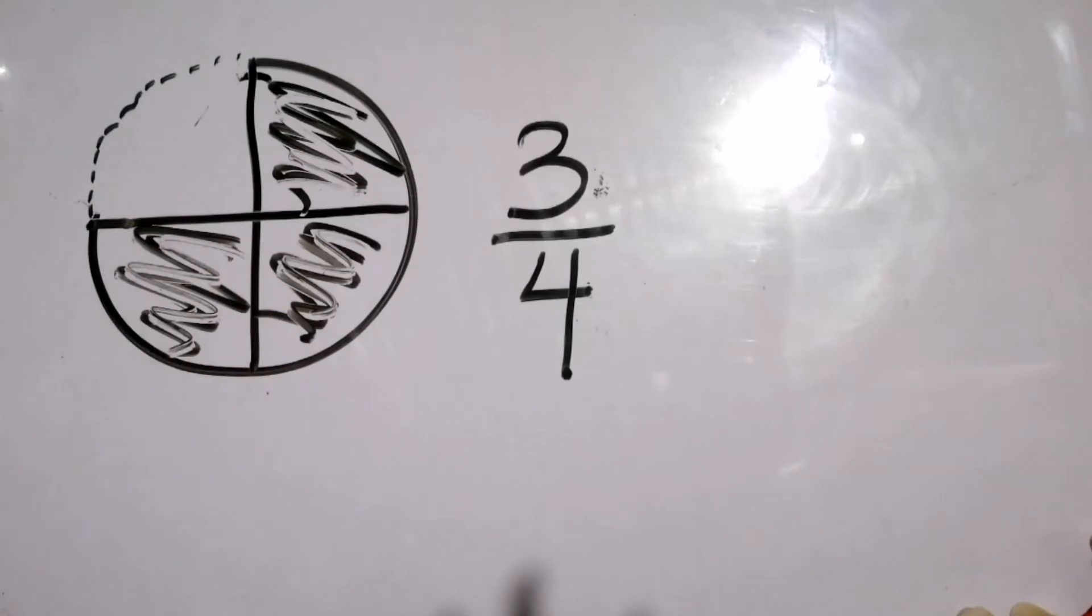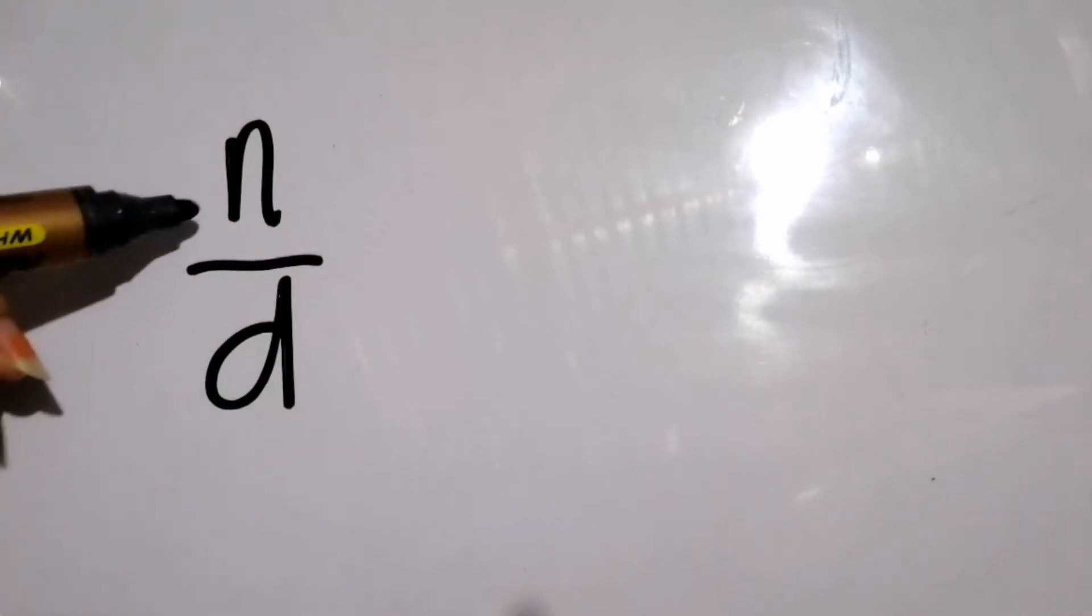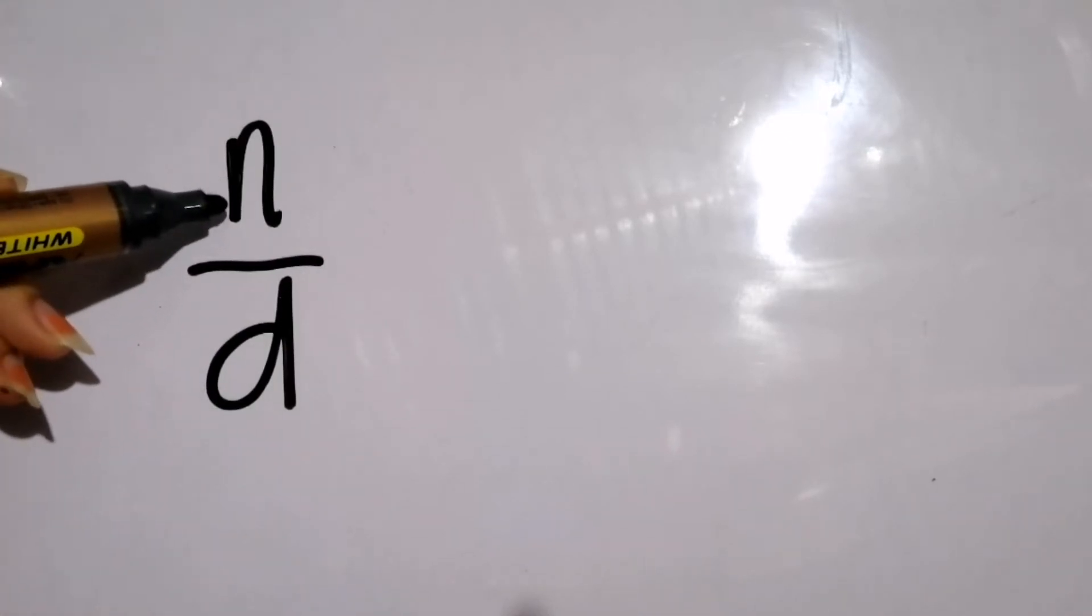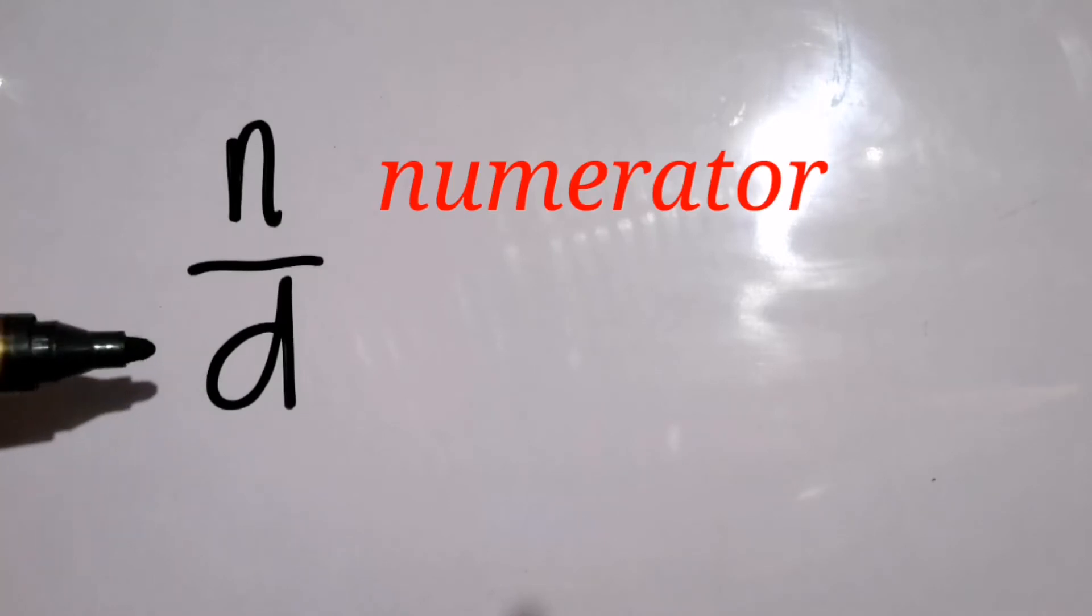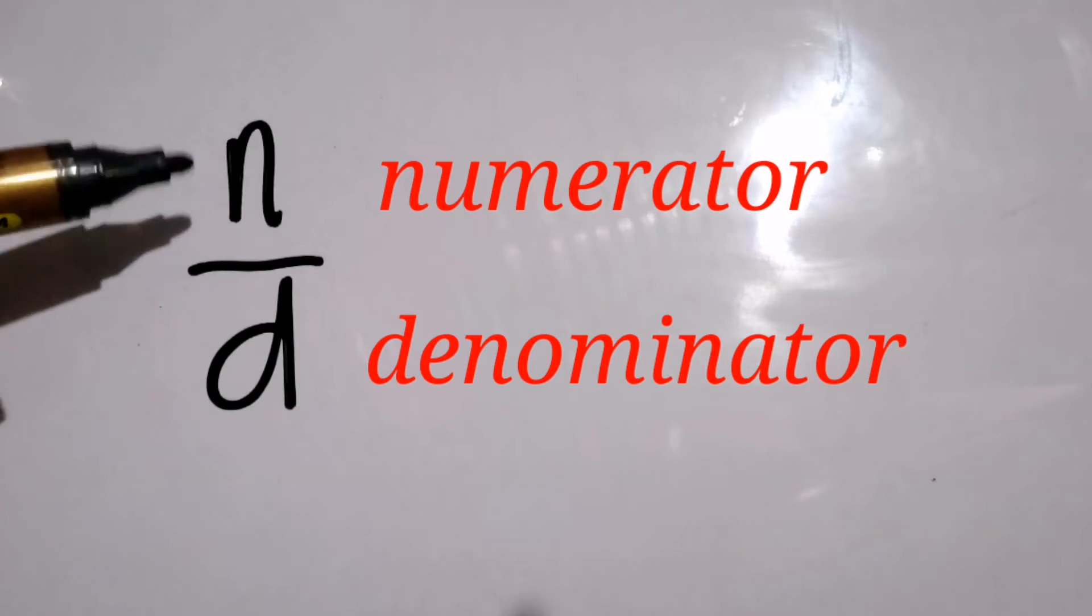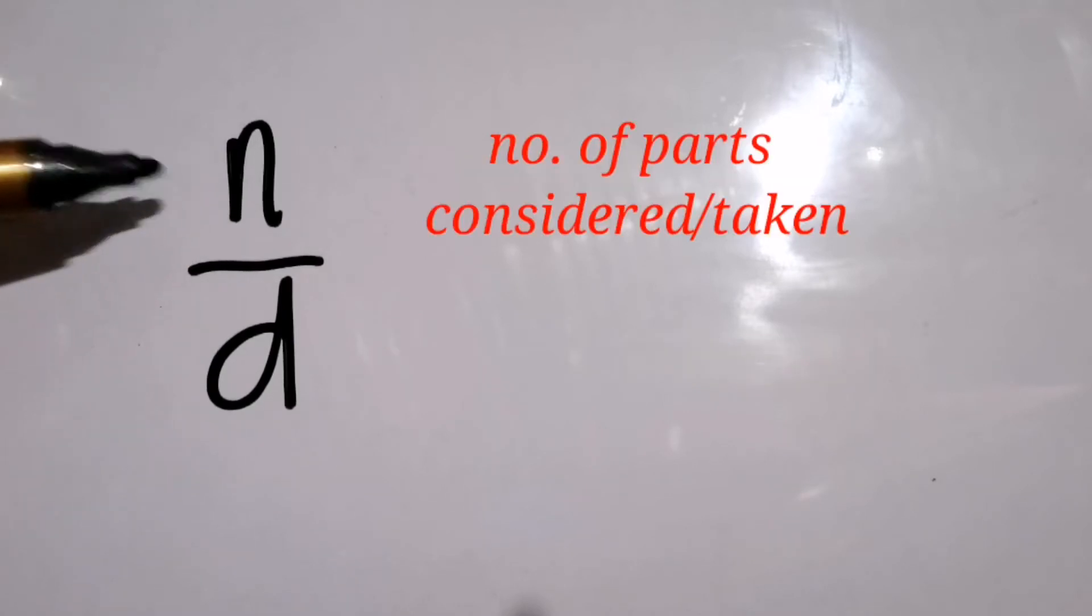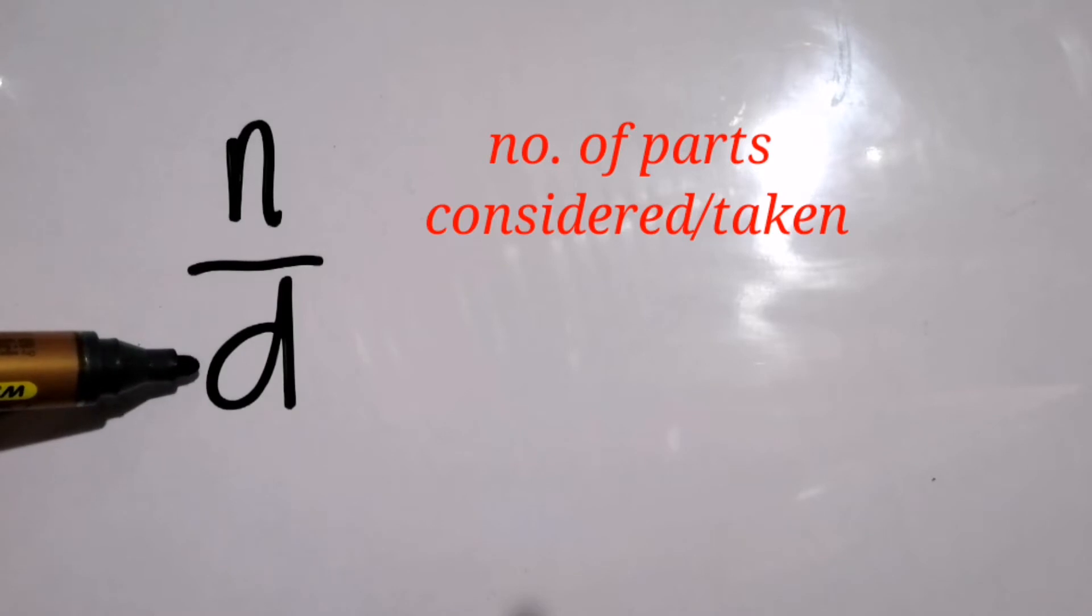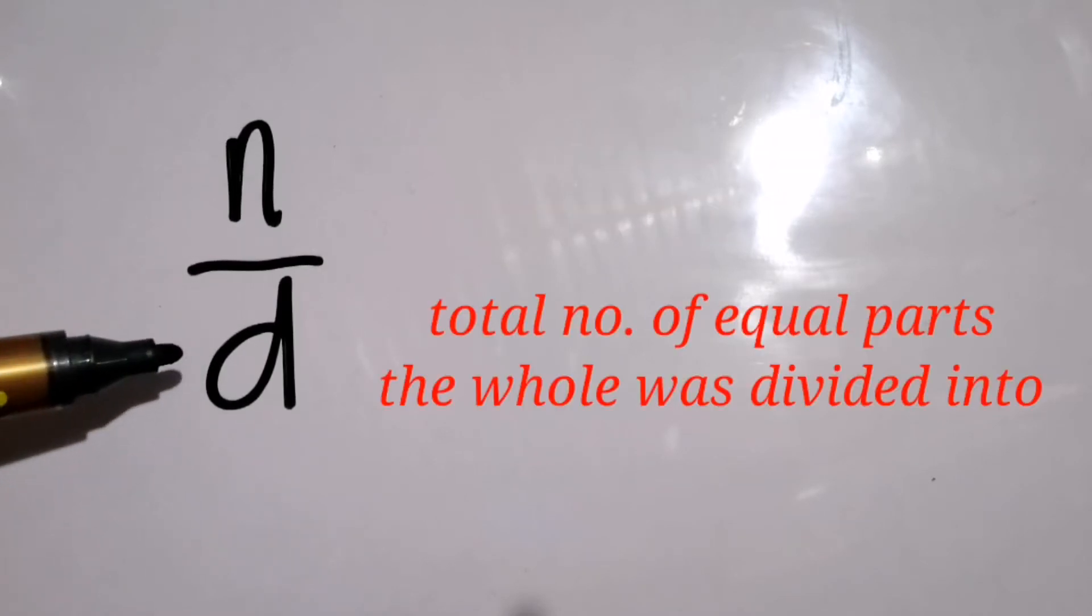In general, fractions are written in this form: n over d, wherein n is our numerator and d is our denominator. The numerator tells us how many parts were taken or considered, and the denominator tells us how many parts the whole was divided into equally.